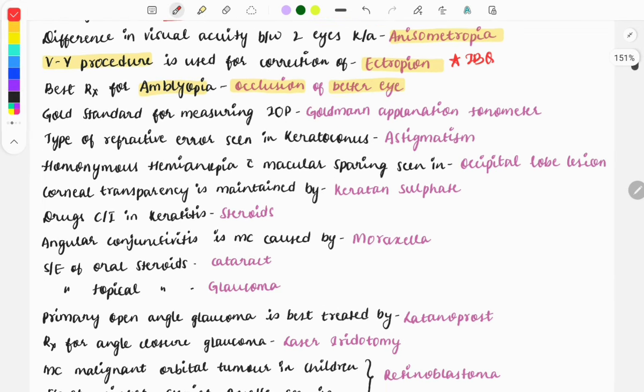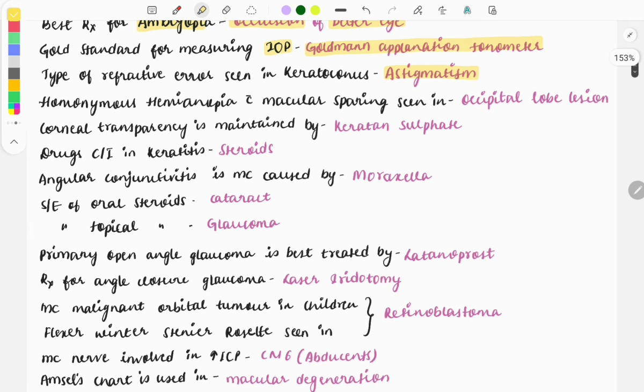Gold standard for measurement of intraocular pressure is Goldman applanation tonometry. Type of refractive error seen in keratoconus is astigmatism. Homonymous hemianopia with macular sparing is seen in occipital lobe lesion. If there is optic chiasma involvement, it will be bitemporal hemianopia. If optic nerve is involved, it will be uniocular blindness. Image-based questions are also asked on visual pathway defects.